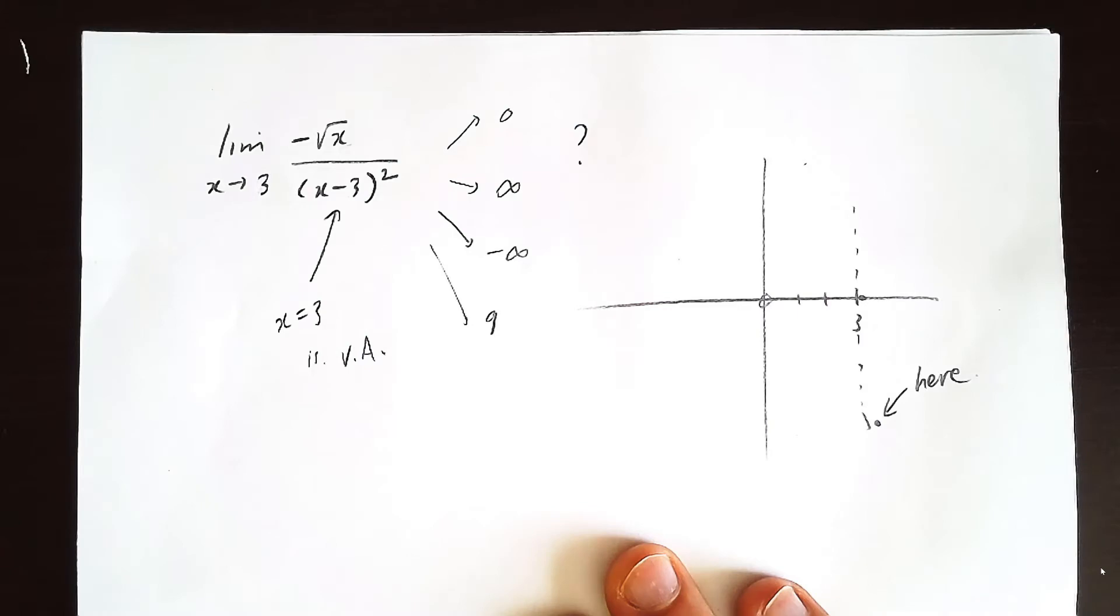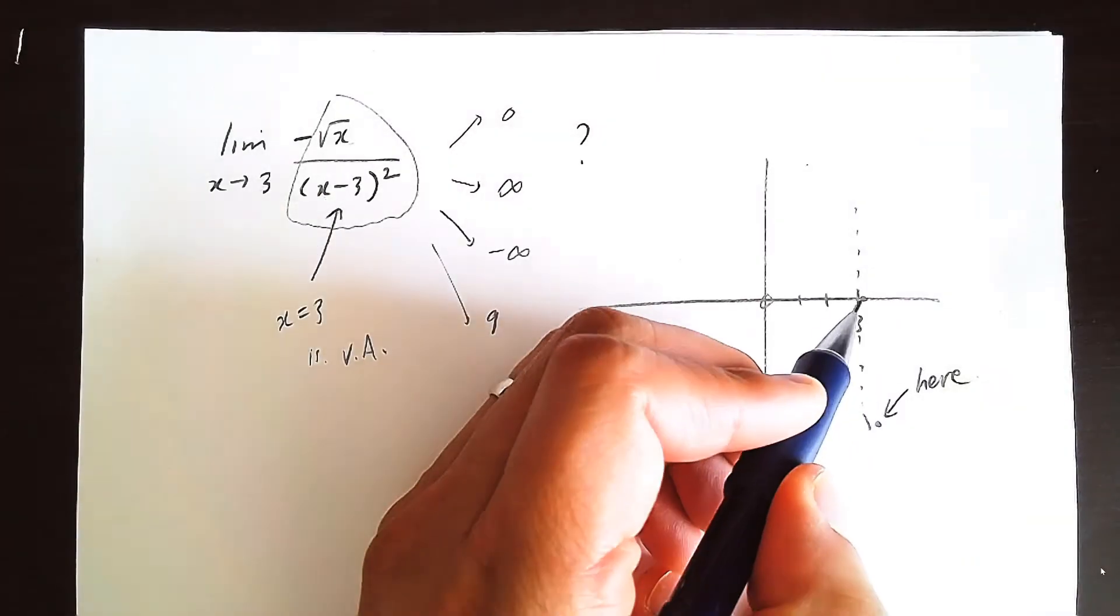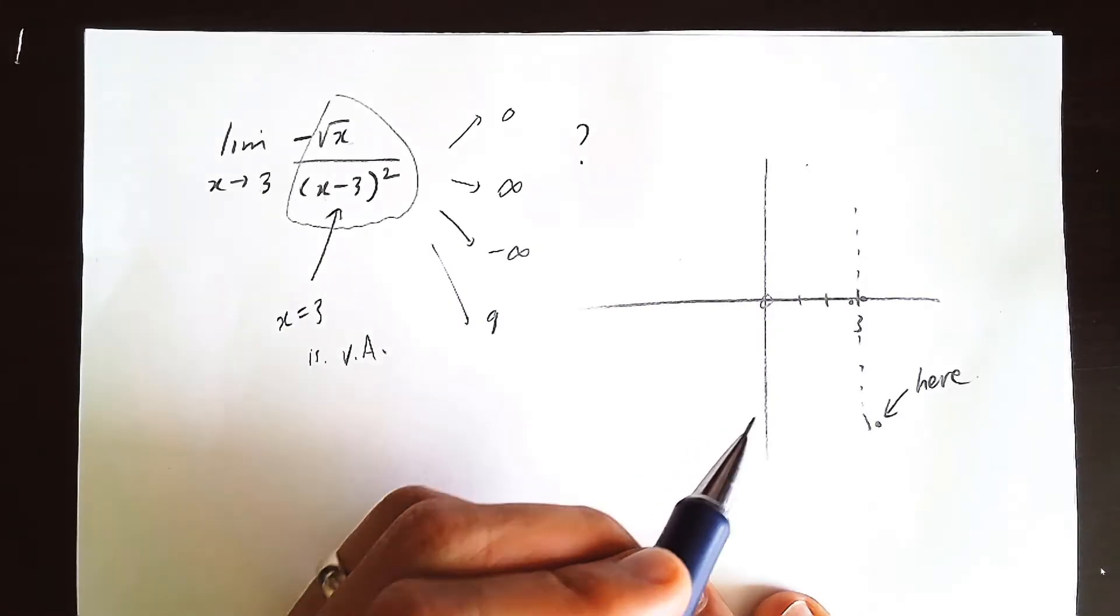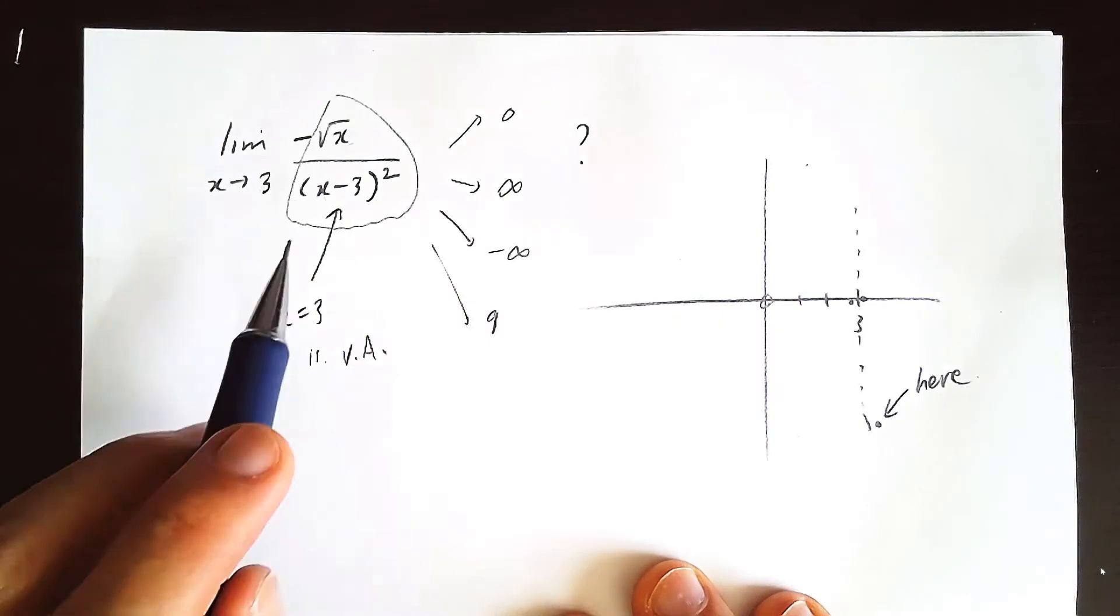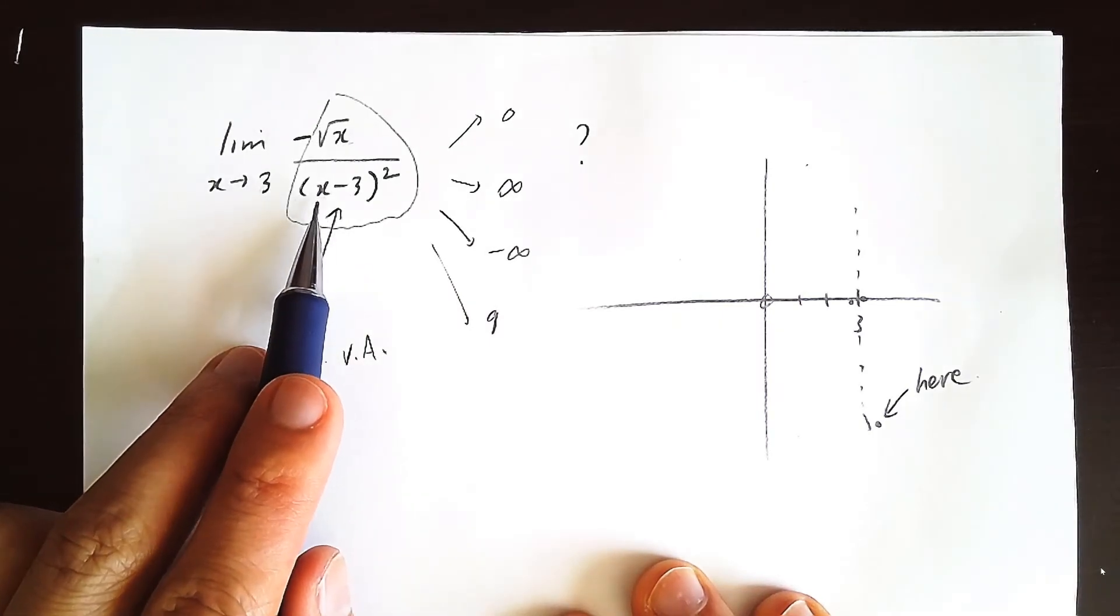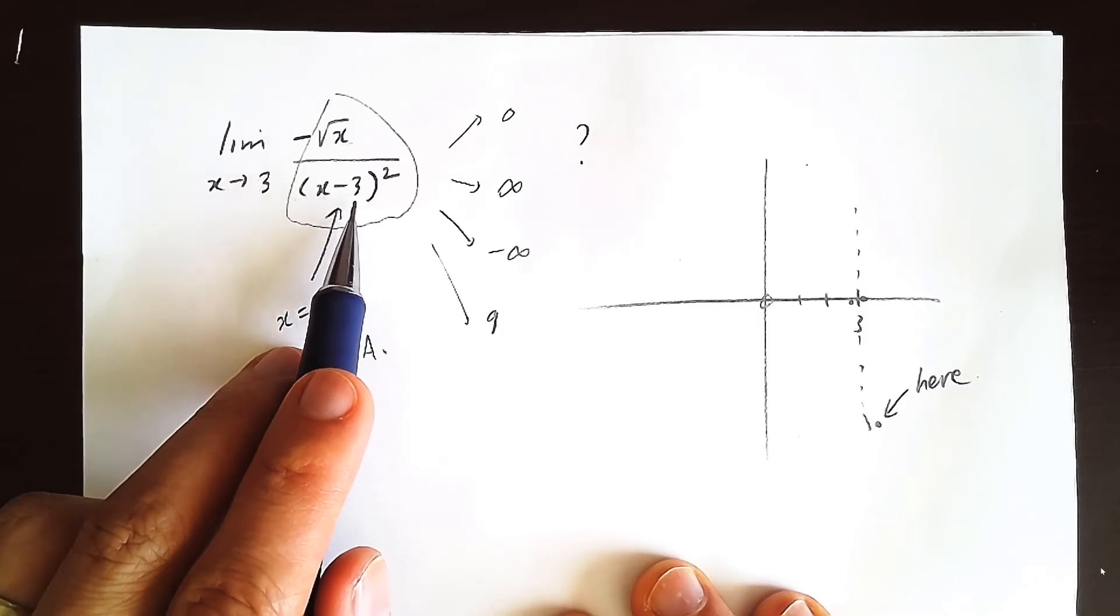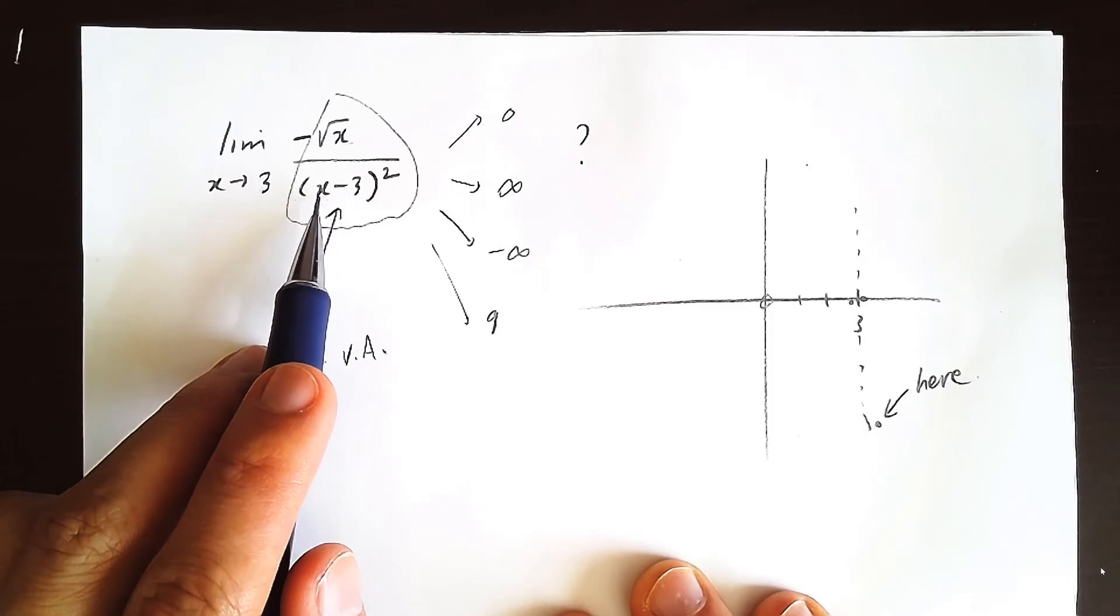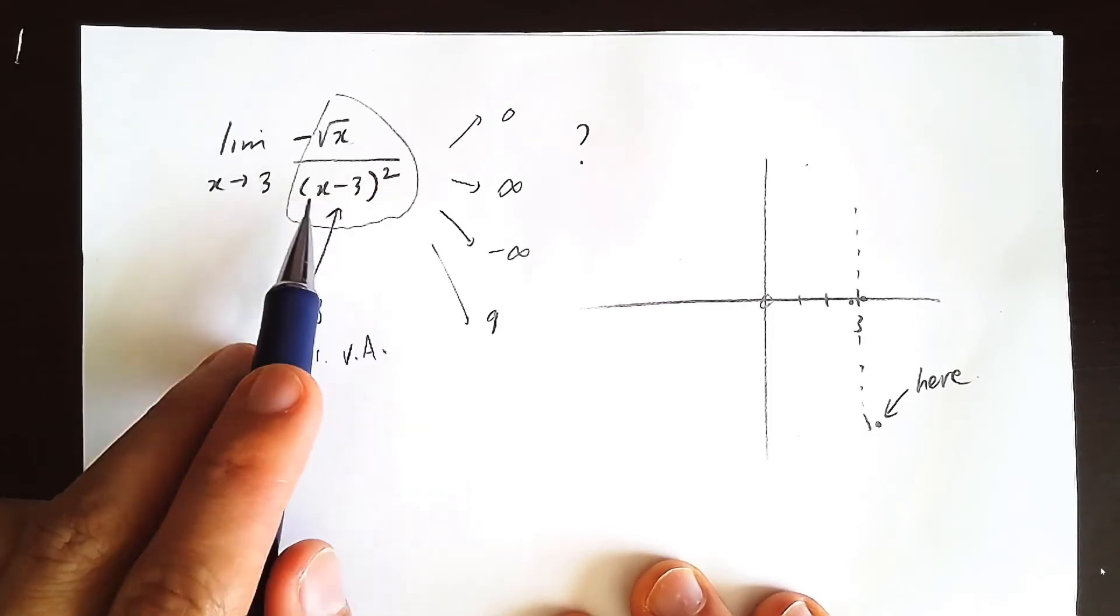Now let's focus on the second case in which x is slightly to the left of three. So suppose x is 2.99999 around here. What's going to happen? Are we going to get a y value that's infinity or negative infinity? So x is supposed to be 2.99999 minus 3 would be negative 0.00001. So negative, a very small number, squared, still ends up being positive.